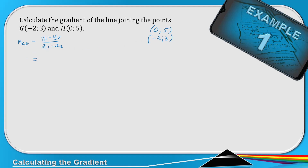That way I don't get confused and accidentally mix up the order. So: (5 − 3) / (0 − (−2)). Be careful with negative values — substitute −2 as negative two, so you write minus negative two, which becomes positive two. Then 2 / 2 = 1. The gradient of GH is 1.